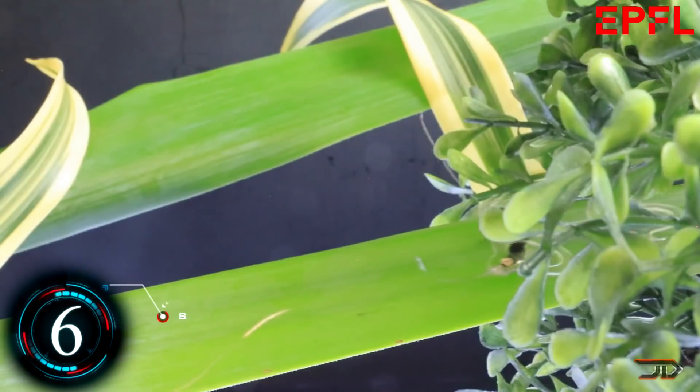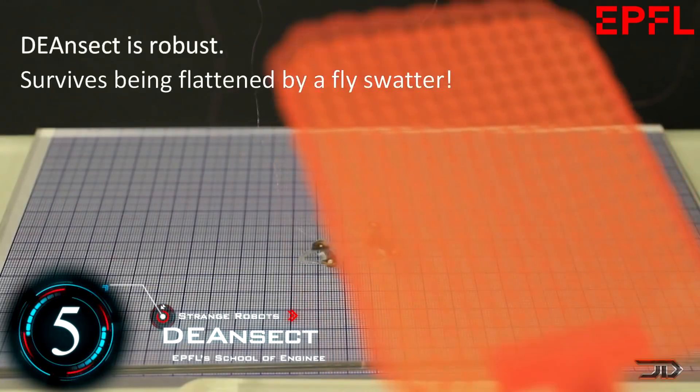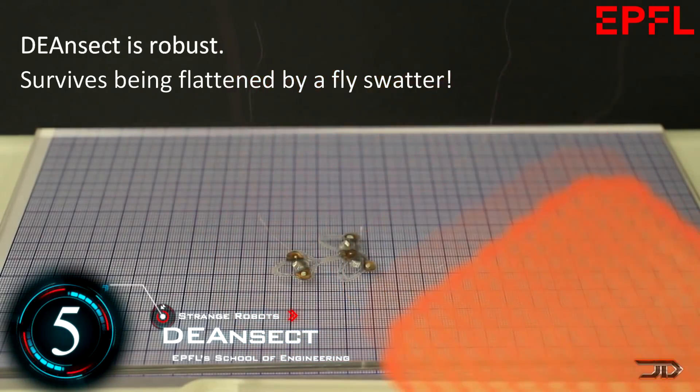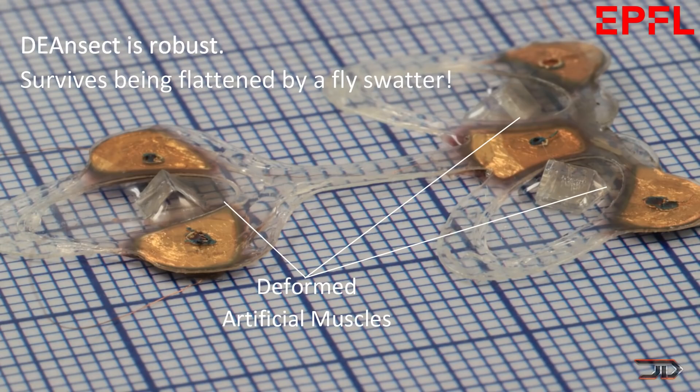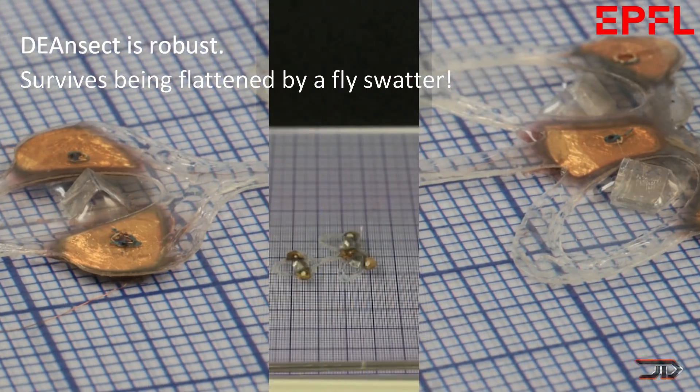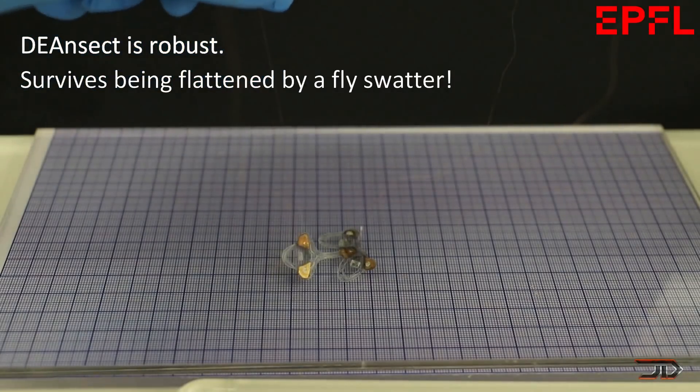Here's a good one for you, and it's called the Dean Sect. This is a good supplementation if you're looking for a real critter to swat, and this thing weighs less than a gram. The robot uses artificial muscles known as integrated dielectric elastomer polymers, DEAs for short. Each silicon leg uses one DEA.